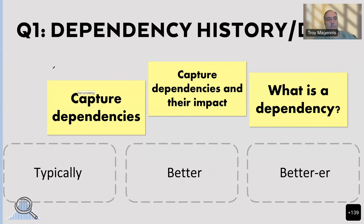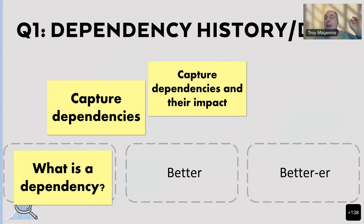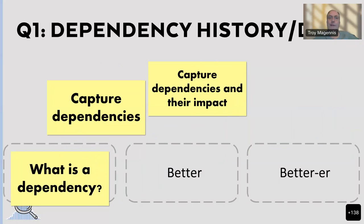I'm going to pose six questions and give you what's typically done now, something better than that, and something even slightly better than that. Think of these as a continuum, because if you go after solving all dependencies at once, you just bring the process to a complete halt. Dependency history and data: remember I said dependencies are just blockers of the future. In capturing dependency data, what would help us manage the process and tell us where it's worth fixing? What I typically see is organizations really don't know what a dependency is — they think it's just a handoff to another team and say 'we solved that, we reorganized six times last year.'